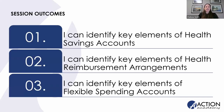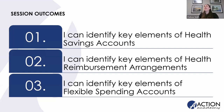Let's dive right into the outcomes of our session today. By the time you are finished, you should be able to identify the key elements that make up health savings accounts, identify the key elements of health reimbursement arrangements, and identify key elements of flexible spending accounts. We are also going to touch on some more niche spending accounts like QSERAs and ICHRAs, but the main focus today will be on those three big ones: HSAs, HRAs, and FSAs.